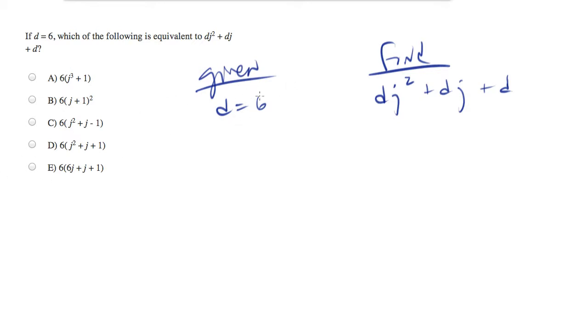So I'm going to take the 6 and plug it in to this equation for d, and we'll end up with 6j squared plus 6j plus 6.